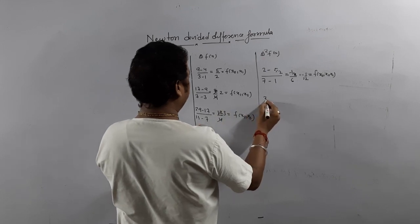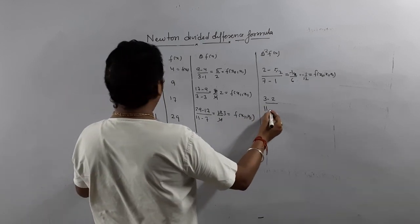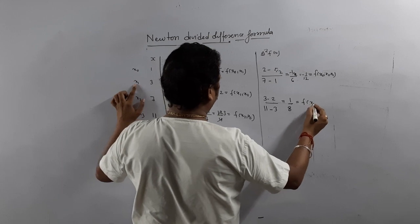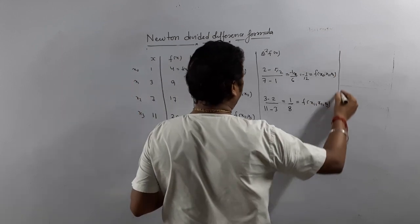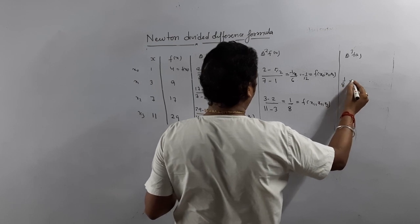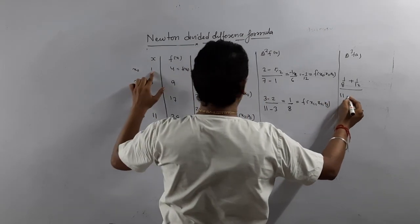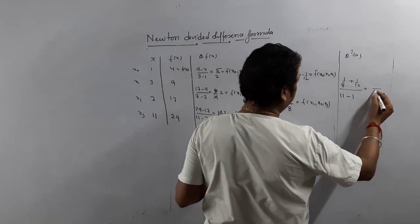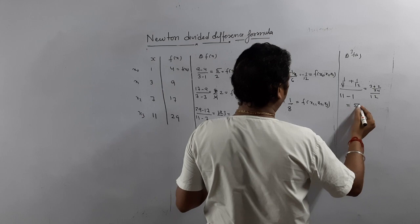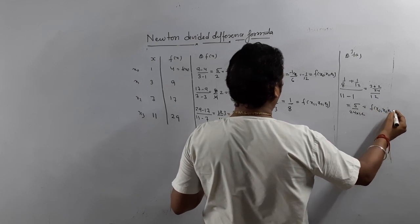The next second divided difference: (3 − 2) divided by (x3 − x1). x3 is 11, x1 is 3, so 11 − 3 = 8. The value is 1/8. This is f[x1, x2, x3]. Now del cube: take the difference of 1/8 and −1/12, divided by (x3 − x0). x3 is 11, x0 is 1, so divided by 10. The value is 1/120. This is f[x0, x1, x2, x3]. All values are now calculated.